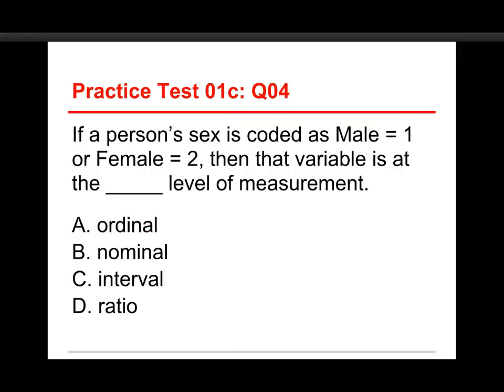A similar question: Number four, if a person's sex is coded as Male equals one or Female equals two — in the last one it was zero and one — then that variable is at the blank level of measurement. The choices are Ordinal, Nominal, Interval, and Ratio. The answer is Nominal. The fact that we changed the coding scheme doesn't matter. A lot of people, when they see zero and one, assume it's Ratio, and if they see one and two, assume it's Interval. But Male and Female are simply different groups, and regardless of how you encode it, it is still a Nominal variable — just different names for different categories.